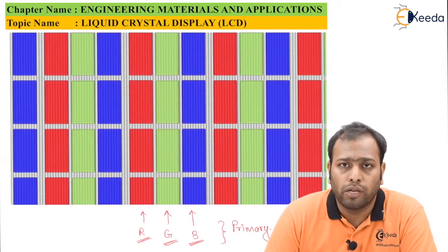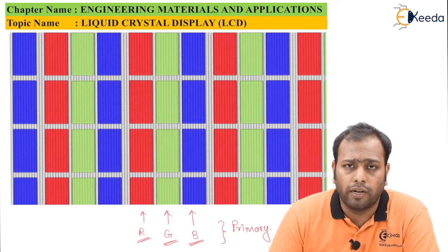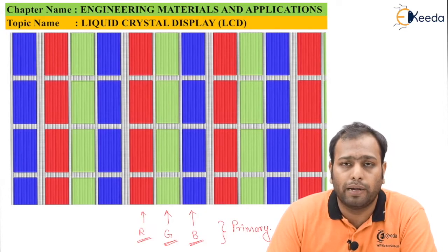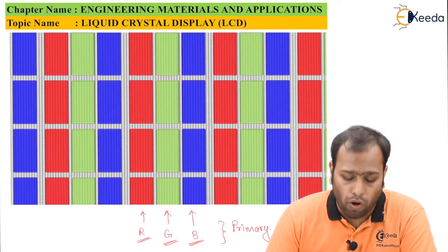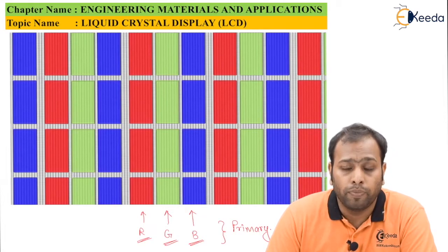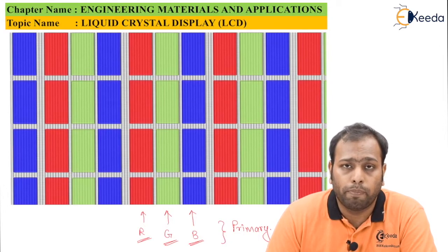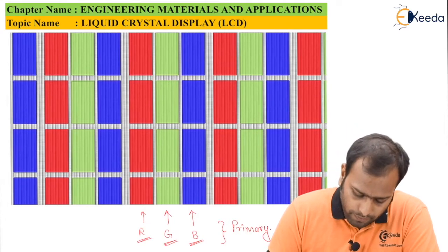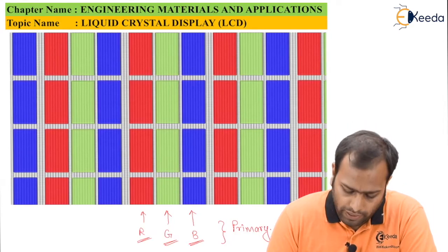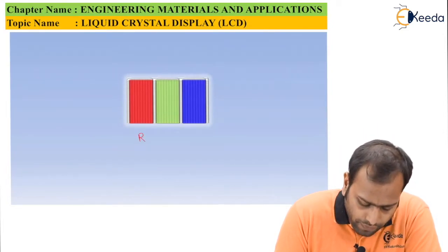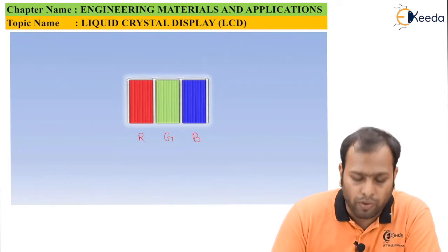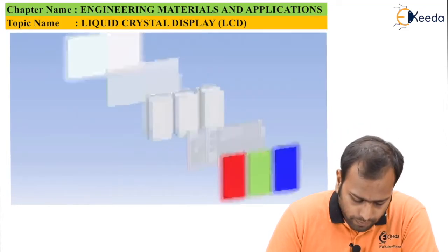You might have come across different display systems wherein one screen is far better than another. This is nothing but the intensity of pixels per unit area. If I have more pixels per unit area, the image quality will be better. If pixels per unit area is less, the image quality will be minimized. So let's take one pixel and study how it works.